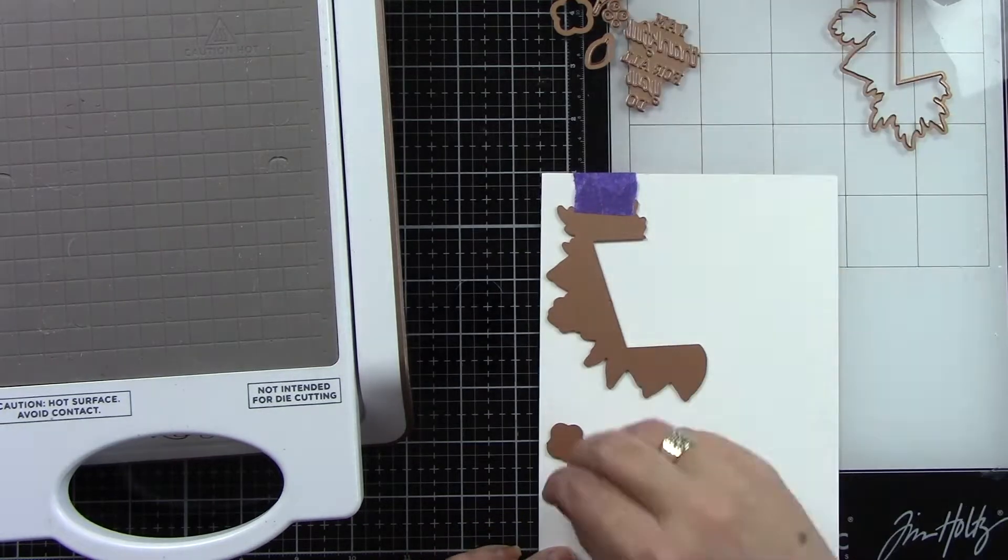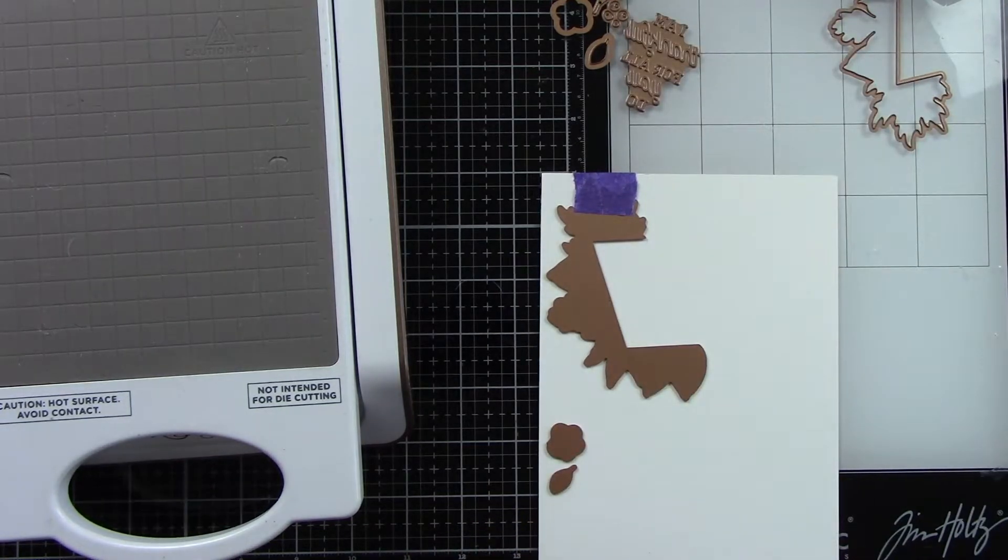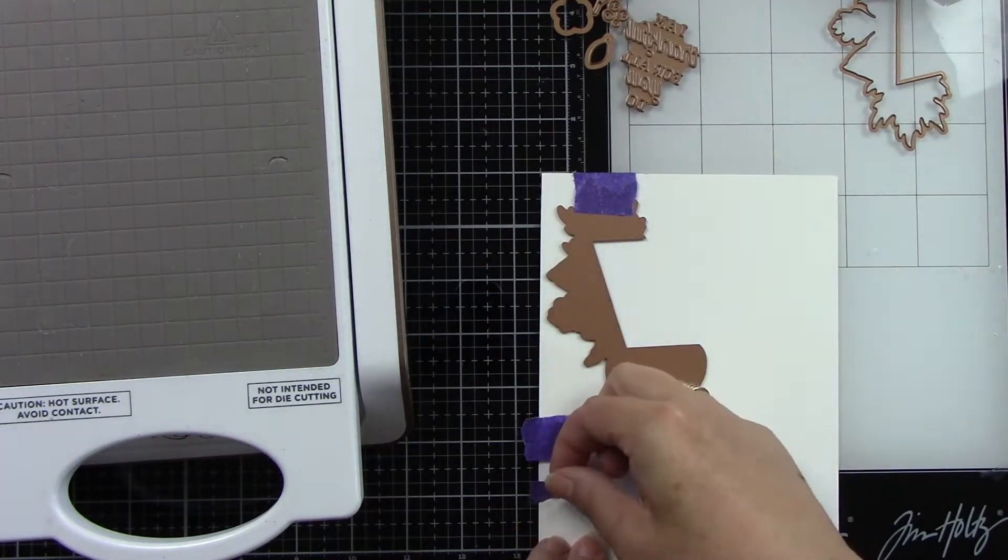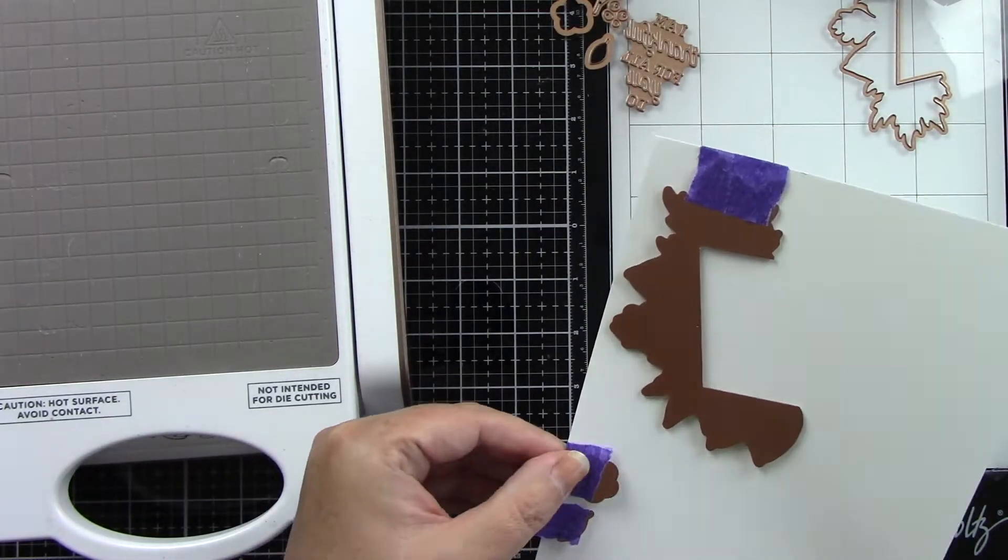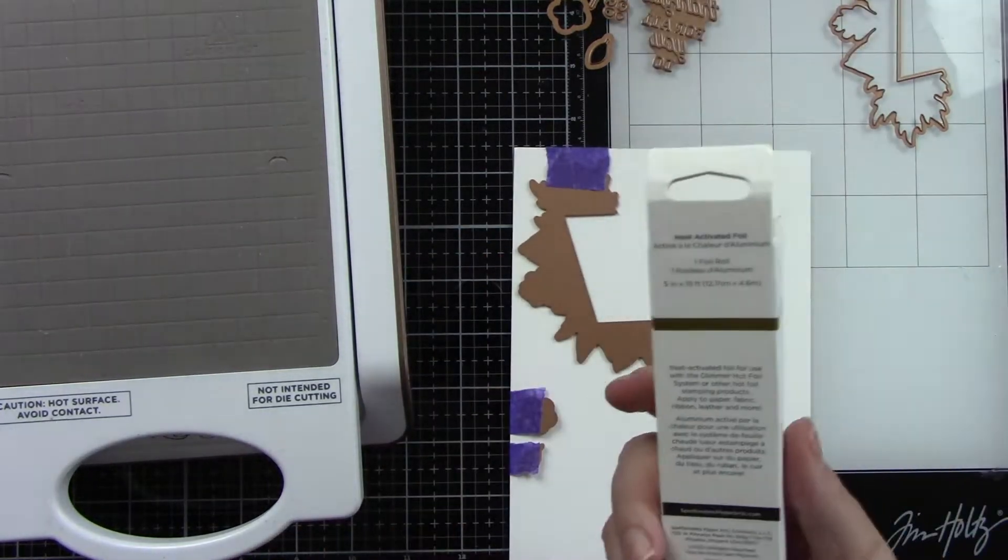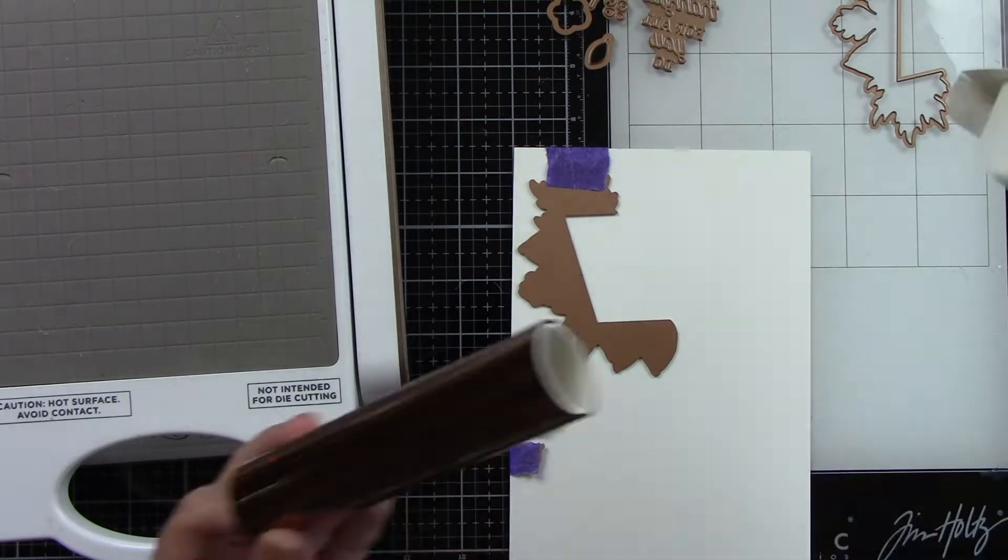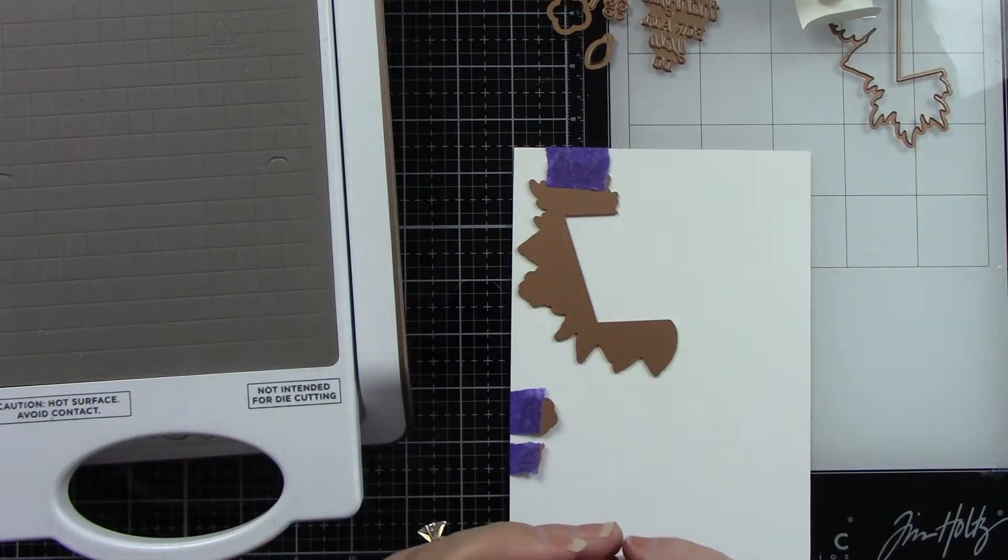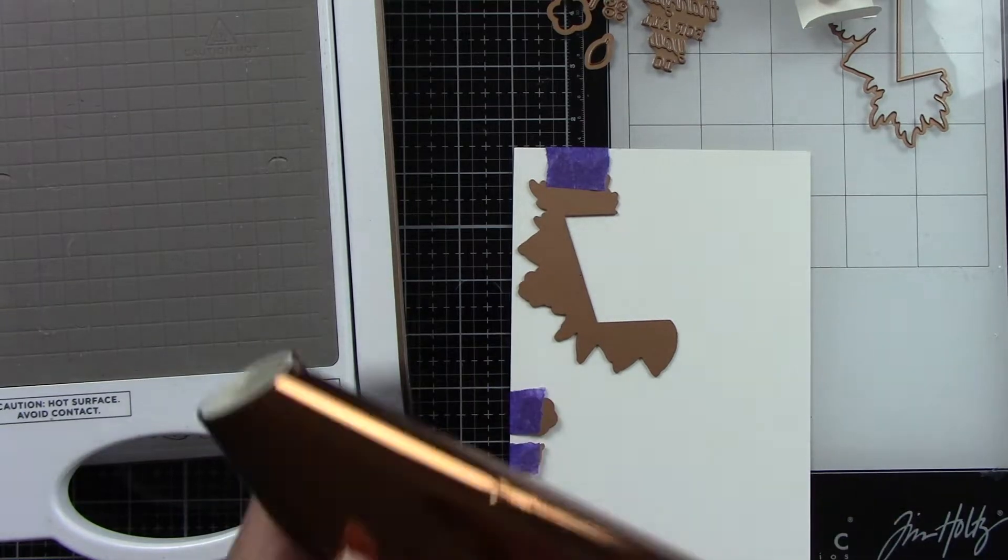I have my Simon Says Stamp 120 pound cardstock. I'm making hinges for my foil pieces. This is the foil that comes with it. It looks like a copper to me. It's super pretty.